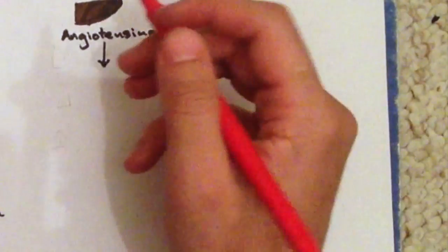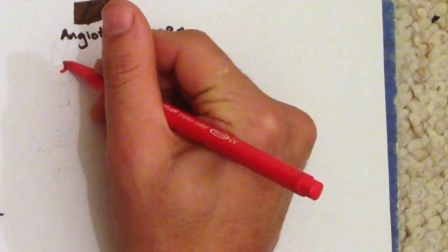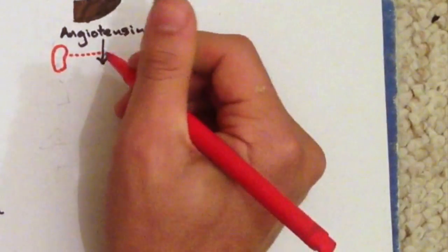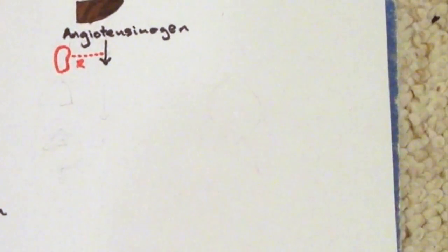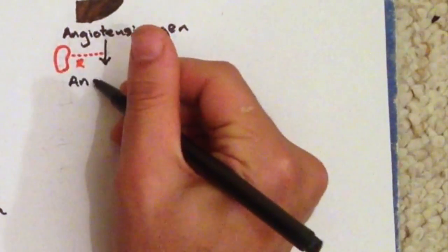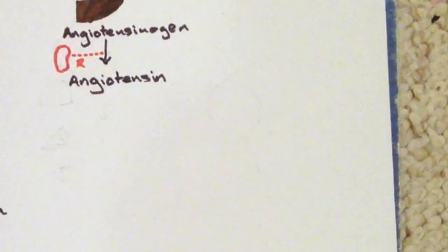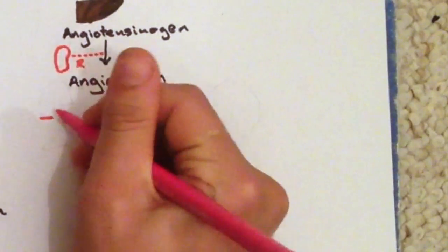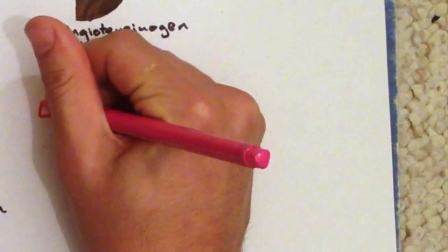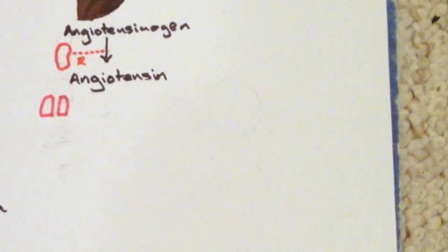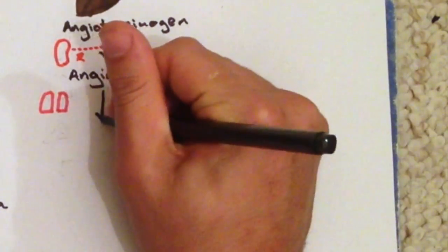So it starts off with a hormone called angiotensinogen, which is released by the liver. This is converted into angiotensin-1 via renin, which is released from the juxtaglomerular cells of the kidney, and this is in response to a low blood pressure. After this, angiotensin-1 is converted into angiotensin-2 by angiotensin-converting enzyme, or ACE. This is from the lungs.